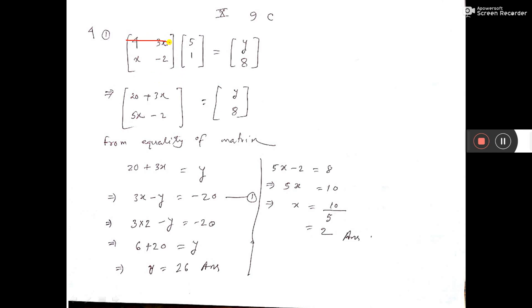First, multiply the matrices. 4 into 5 plus 3x into 1, then x into 5 plus minus 2 into 1, equals y, 8.